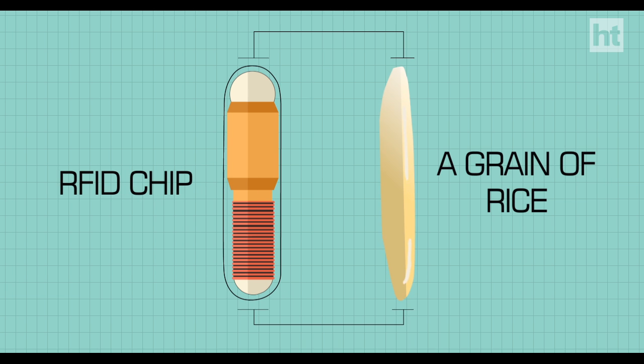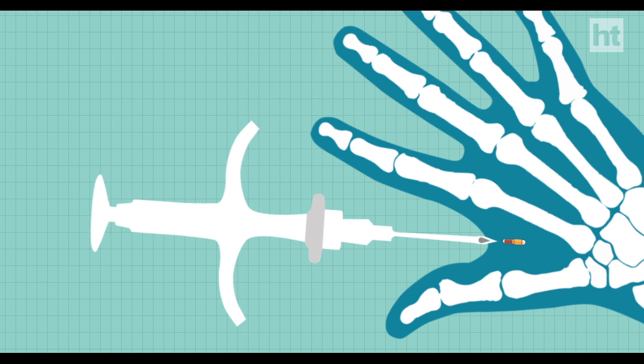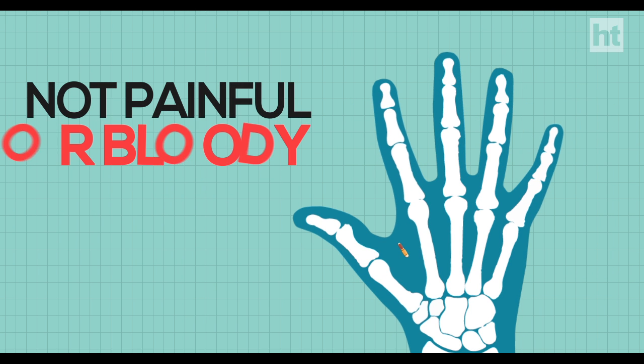The implanted chip is as big as a grain of rice. It is injected through a syringe in the fleshy area beneath the thumb. The process lasts only a few seconds and is not painful or bloody.